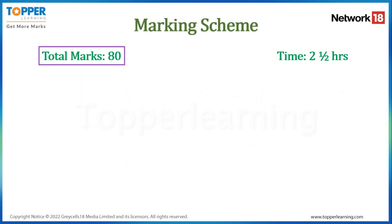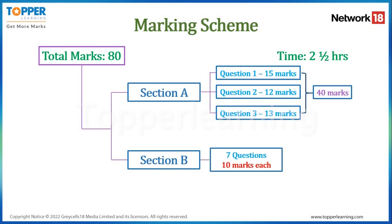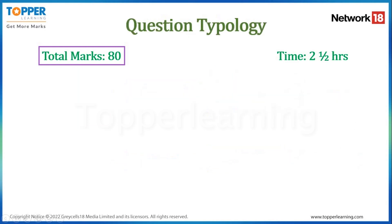Section A has three questions: Question 1 is of 15 marks, Question 2 is of 12 marks, and Question 3 is of 13 marks, totaling 40 marks. Section B has seven questions of 10 marks each; since you attempt any four, that is also 40 marks. So Section A is 40 marks, Section B is 40 marks, giving a grand total of 80 marks.